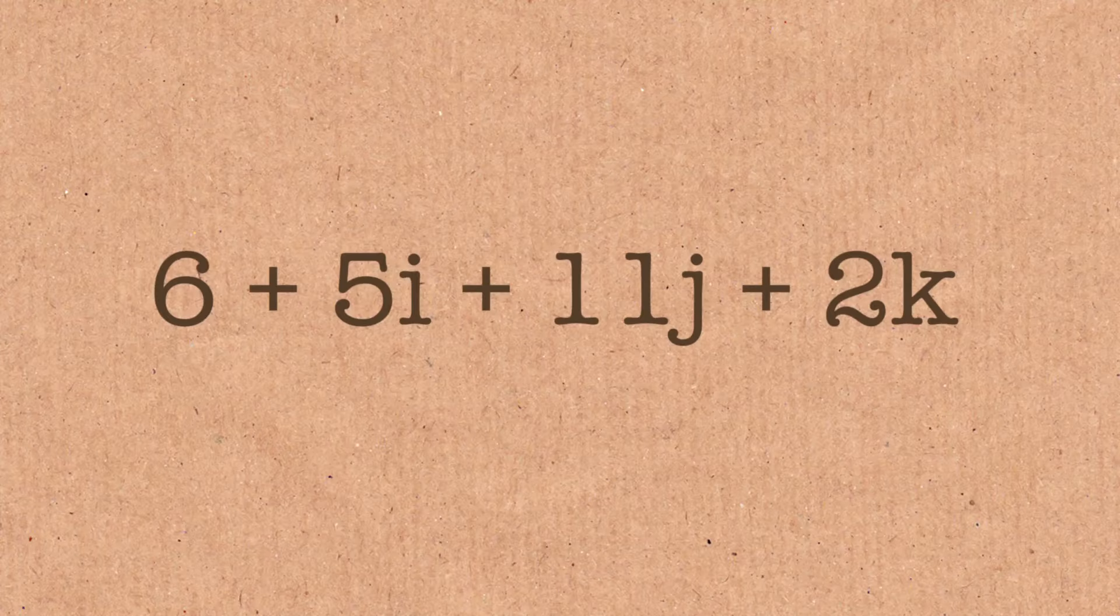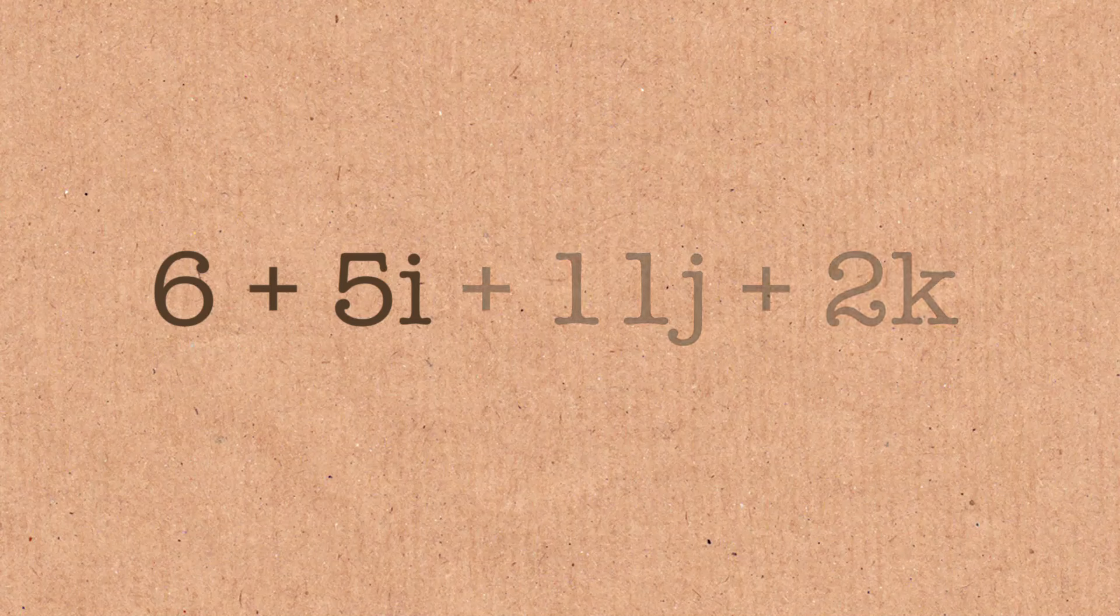So the complex numbers contain the real numbers as well. And it turns out the quaternions contain the complex numbers. And in turn, they contain the real numbers. And when you don't need the j and the k, now you've got a complex number. And if you don't need the i, you've got a real number. So you might be thinking, what's next? Is there a next step up? And there is.